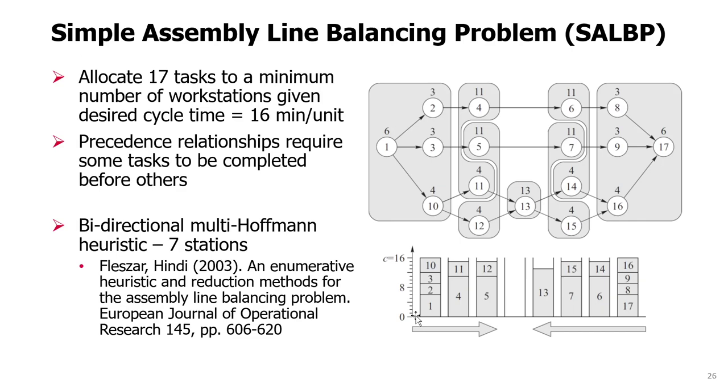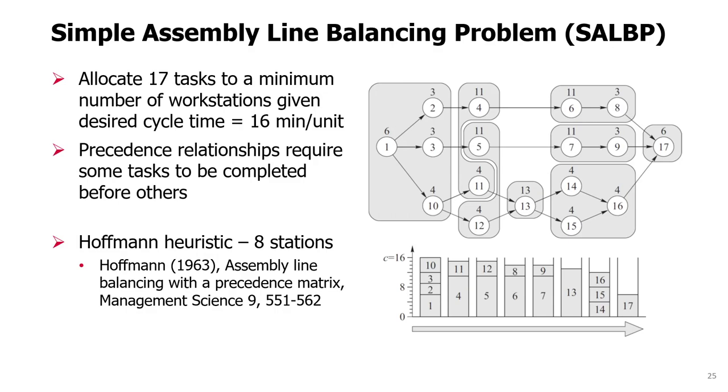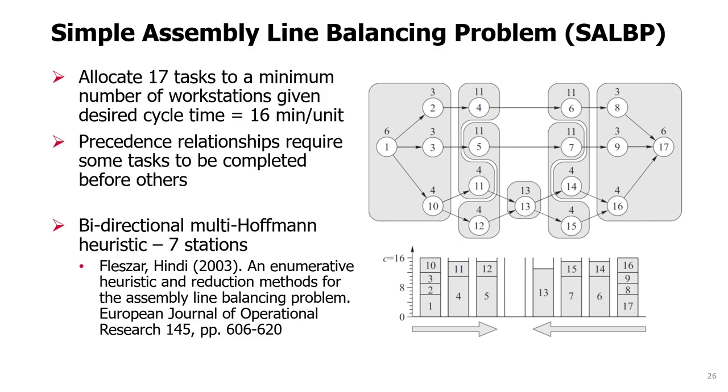So you see for this example, the solution is actually three stations forward, four stations backward, and the total stations utilized are now seven compared to the earlier solution, which was created in one direction that had eight stations utilized. Of course, we can now save because we need one less worker, for example, to produce this.